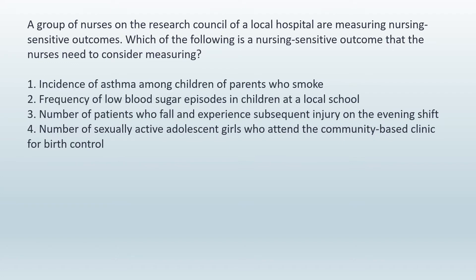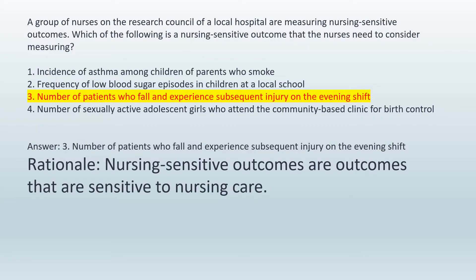A group of nurses on the Research Council of a local hospital are measuring nursing-sensitive outcomes. Which of the following is a nursing-sensitive outcome that the nurses need to consider measuring? 1. Incidents of asthma among children of parents who smoke. 2. Frequency of low blood sugar episodes in children at a local school. 3. Number of patients who fall and experience subsequent injury on the evening shift. 4. Number of sexually active adolescent girls who attend the community-based clinic for birth control. Answer: 3. Number of patients who fall and experience subsequent injury on the evening shift. Rationale: Nursing-sensitive outcomes are outcomes that are sensitive to nursing care.